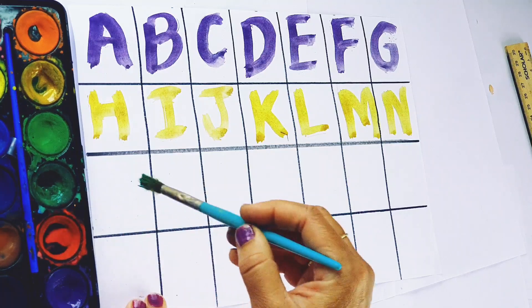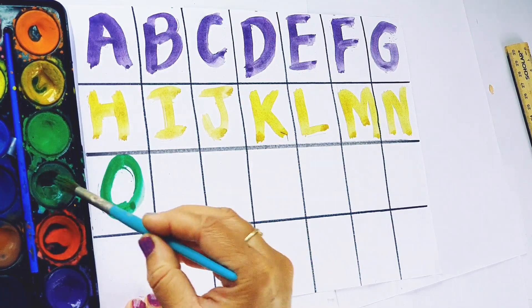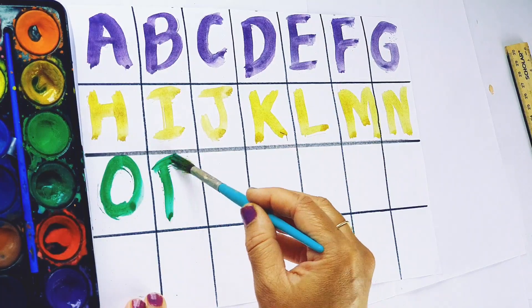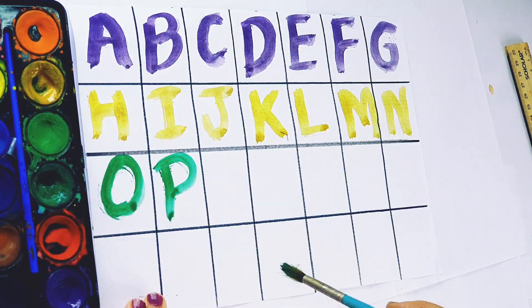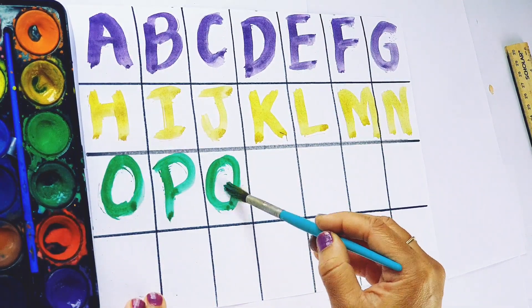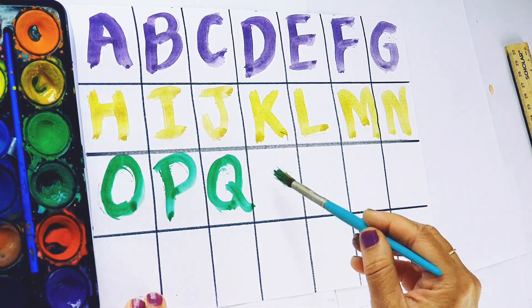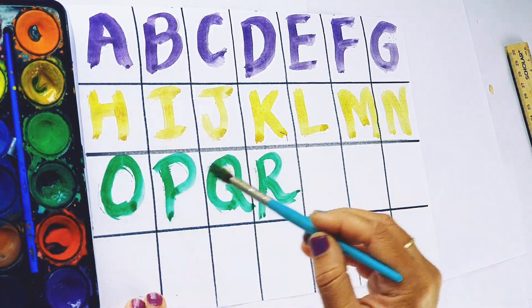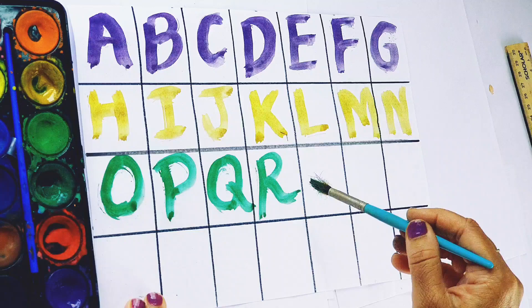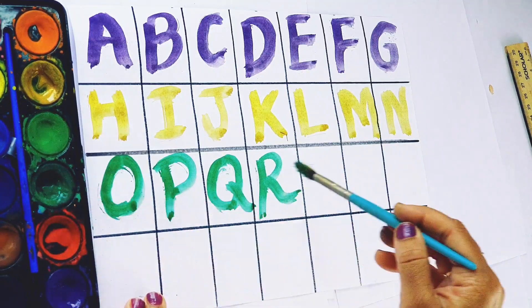Dark green color. O, O for owl. P, P for piano. Q, Q for queen. R, R for ring.